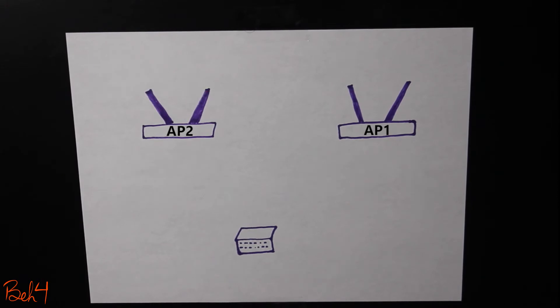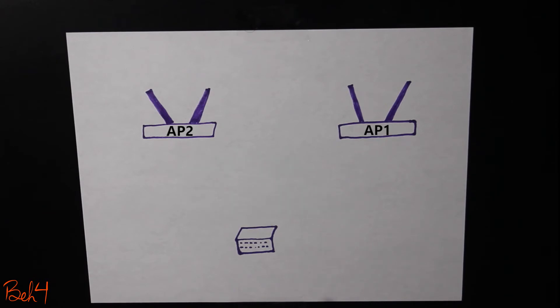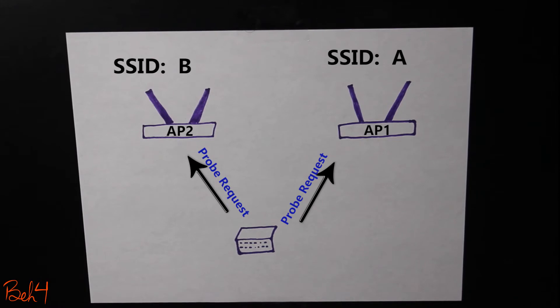The second method is called active scanning. In this method, instead of listening, the client is going to actively search by sending probe request frames on all its available channels. It can either specify what SSID it's looking for or search for all the available SSIDs that are being offered by the access points around.